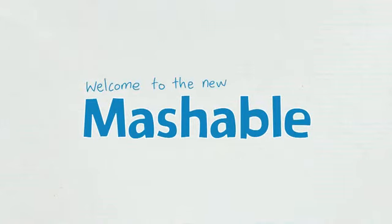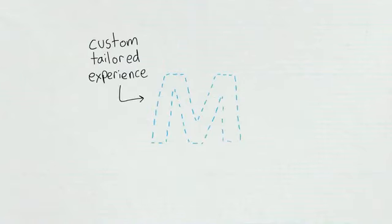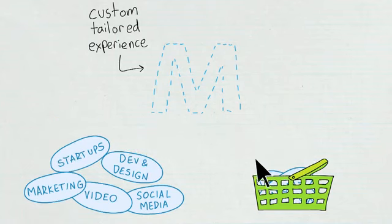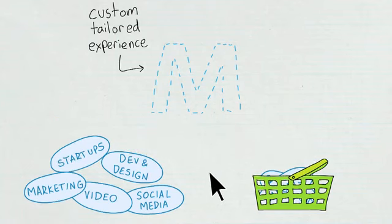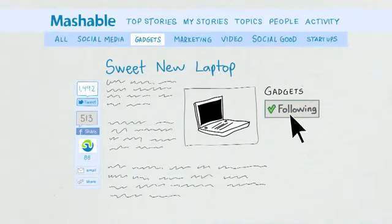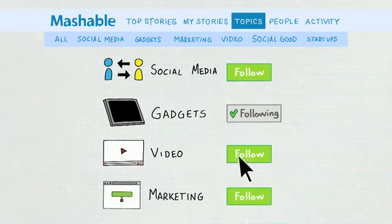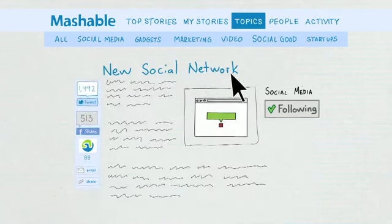Welcome to the new Mashable. With Mashable Follow, you can have a custom-tailored experience by only following the topics that interest you and ignoring the ones that don't. It's super easy — just look out for the Follow buttons on articles, or click the Topics menu item to find topics you like. Then hit the Follow button next to any topic to receive updates whenever Mashable publishes a new article on that topic.